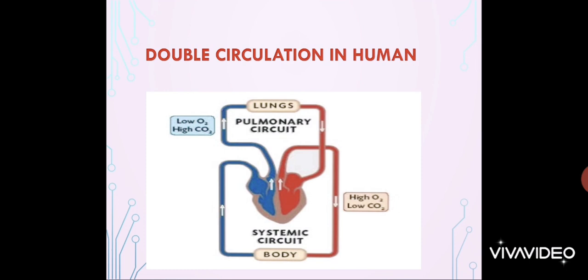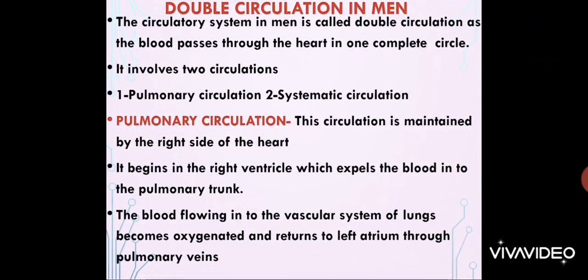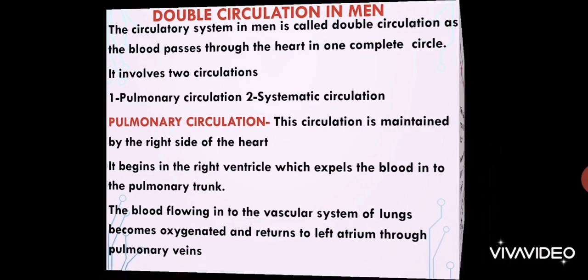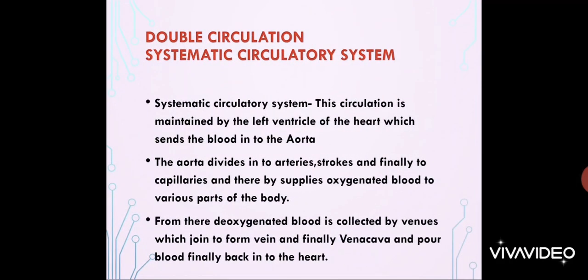Now, what is double circulation in human beings? The circulatory system of humans is called double circulation because blood passes through the heart twice in one complete cycle of the body. It involves two circulations. Pulmonary circulation is maintained by the right side of the heart. It begins in the right ventricle, which expels blood into the pulmonary trunk. The blood flows into the vascular system of the lungs, becomes oxygenated, and returns to the heart's left atrium through the pulmonary vein.